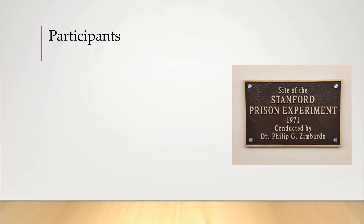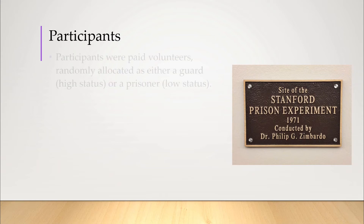18 participants were obtained via an ad in the university paper for a paid volunteer experiment and screened for good health and mental stability. Those randomly allocated as prisoners were mock arrested by the actual police, handcuffed and taken out of their homes — first to an actual jail, then to the basement of the psychology department at Stanford University.